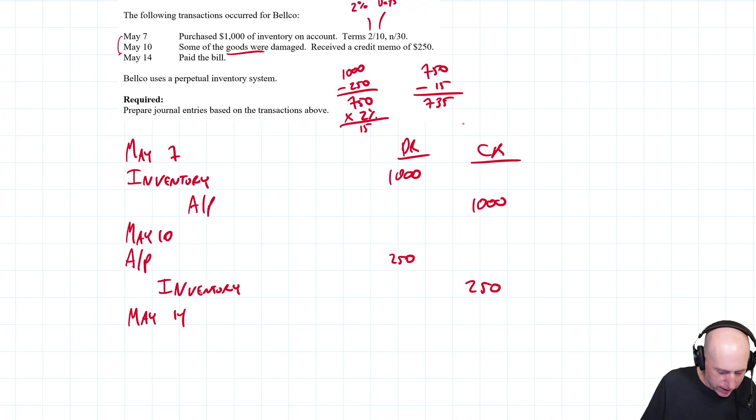Let's credit cash for $735. We've got to get rid of all of the AP - the full amount of the AP was $750. And then we're off by $15.